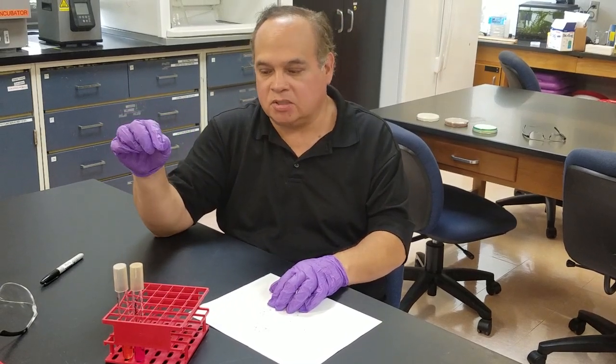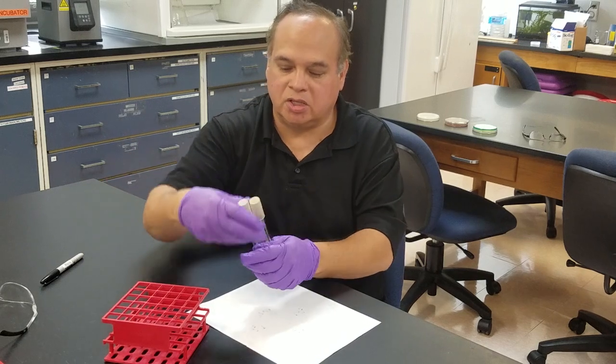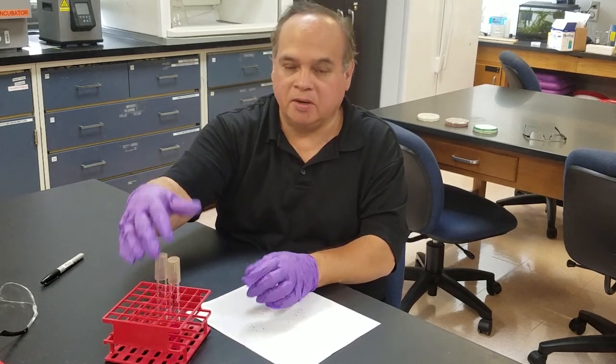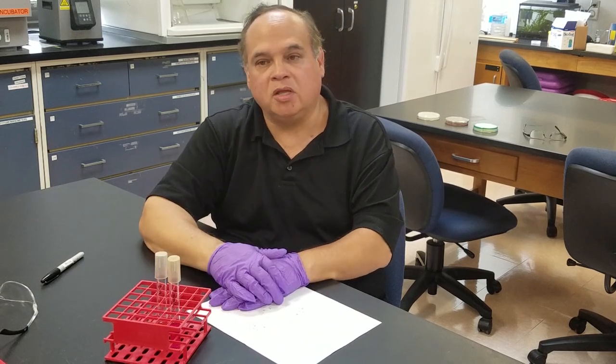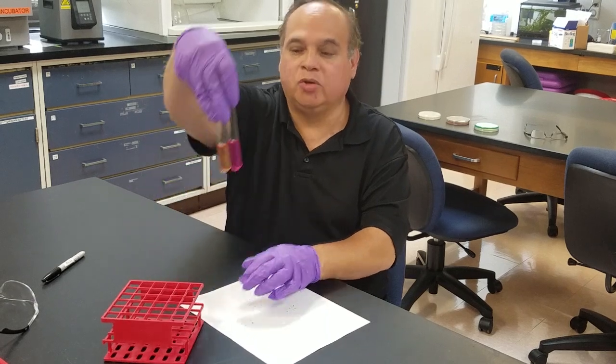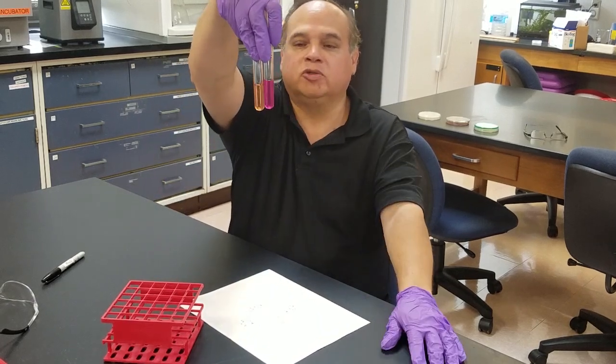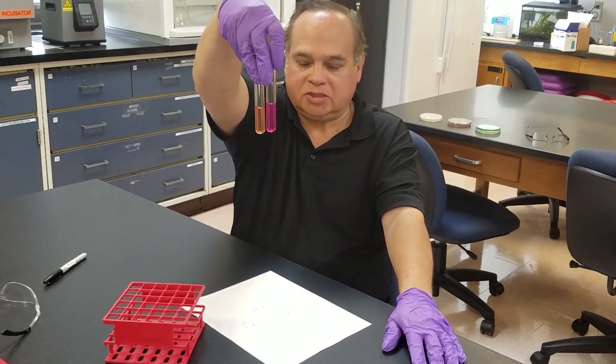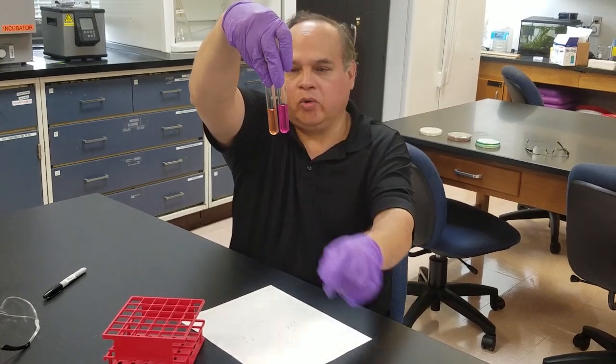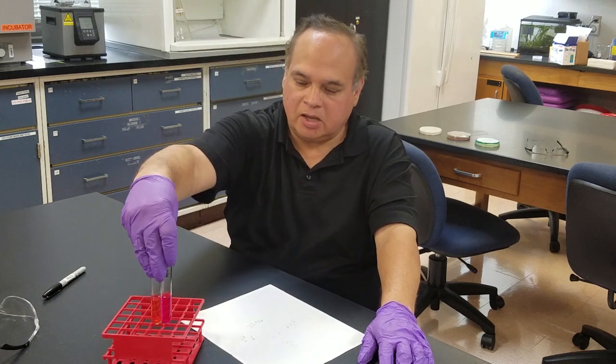In this case we used E. coli and Proteus mirabilis. Then you inoculate them, incubate them for 24 hours, and come back. If you look at them you can see that if it turns fuchsia it's positive, if it remains orange then it's negative.